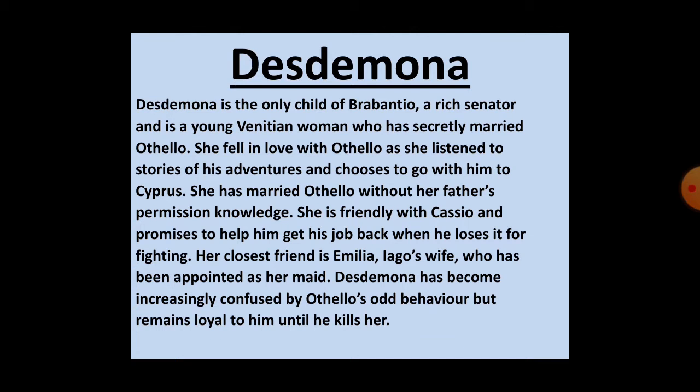Desdemona is friendly with Cassio and promises to help him get his job back when he loses it for fighting. Her closest friend is Emilia, Iago's wife, who has been appointed as her maid-servant. Desdemona becomes increasingly confused by Othello's odd behavior but remains loyal to him until he kills her.